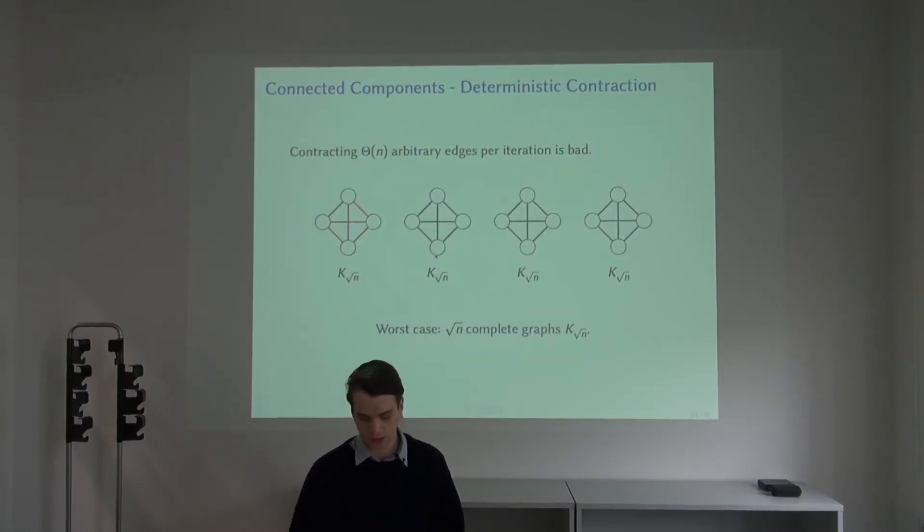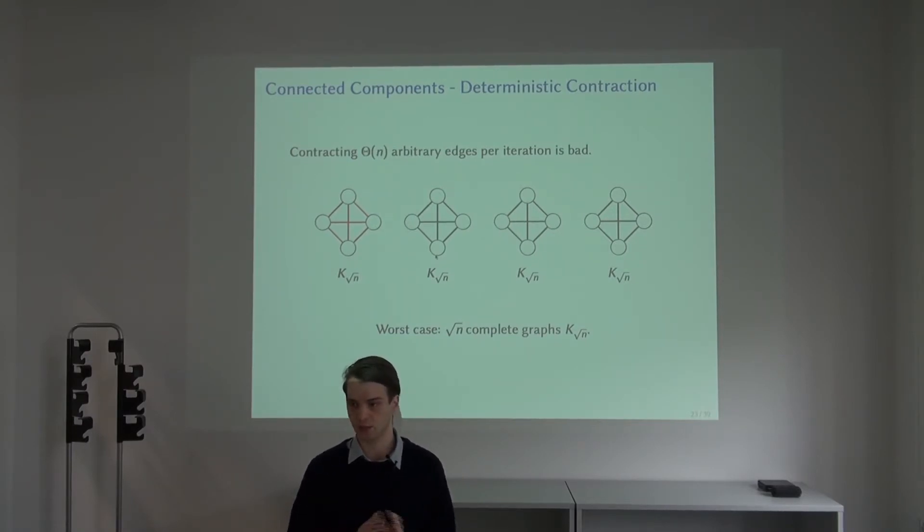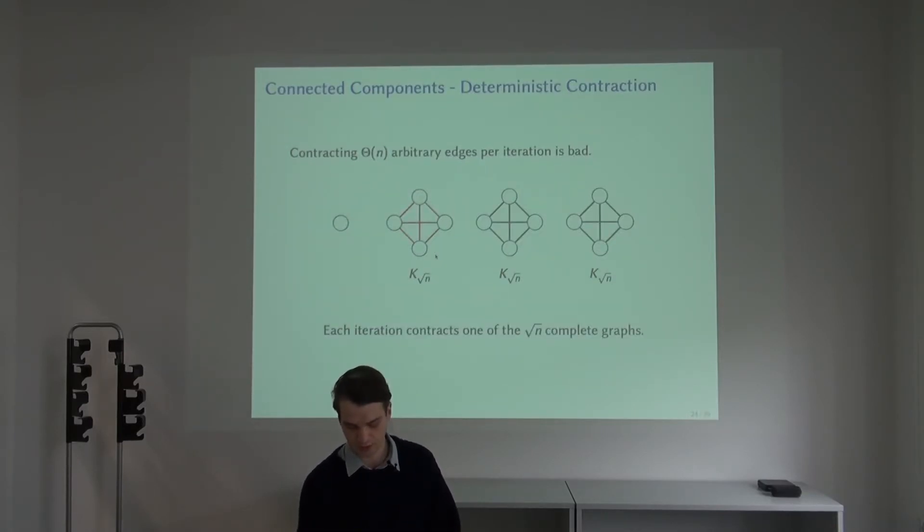For example, consider the following worst case instance. We have square root of n copies of complete graphs on square root of n vertices. Then if we choose about n edges, it could happen that we choose edges that come from the same component. In every iteration of this algorithm, we would just contract one of these components.